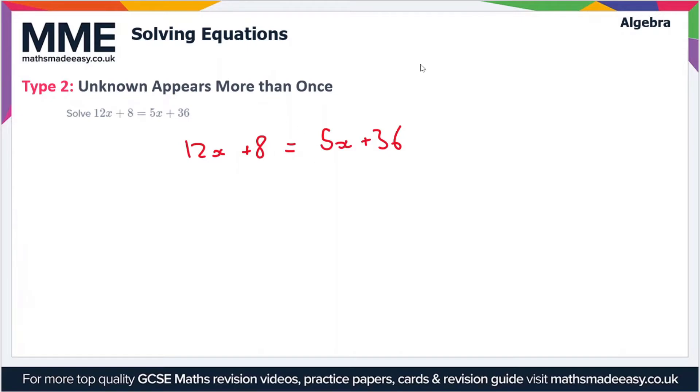First of all, what we can do in the first step is we can minus 5x from both sides. So we're going to be left with 12x minus 5x plus 8 here, and then 5x minus 5x plus 36.